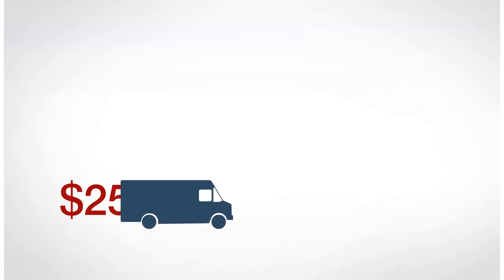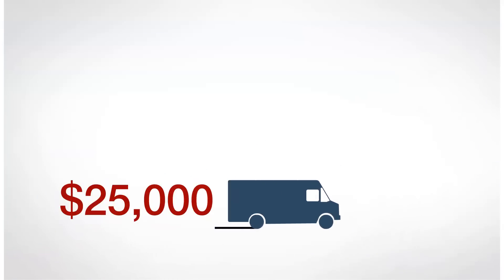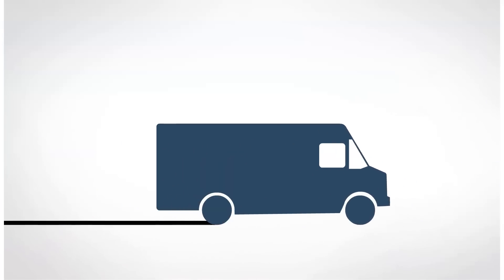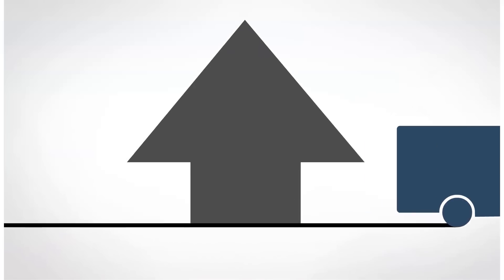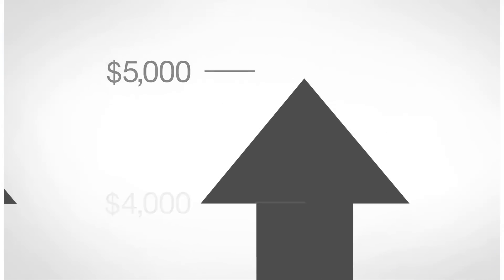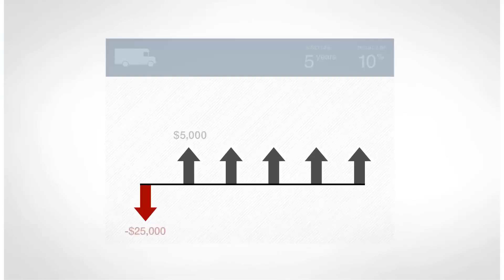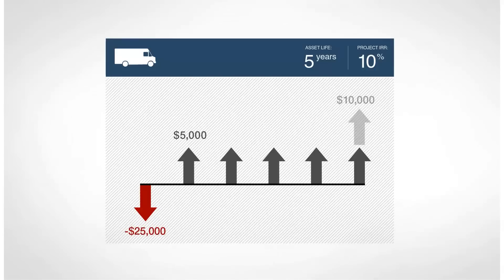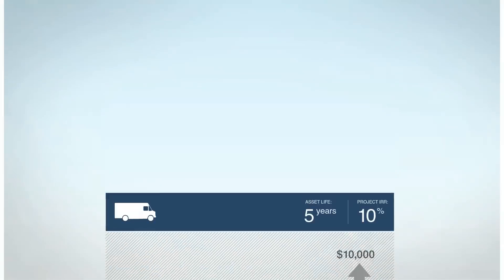Let's imagine we're starting a freight delivery company. Our first project is purchasing a truck to make deliveries. We pay $25,000. Once the truck is in service, the deliveries it makes produce $5,000 of operating cash flow each year. At the end of five years, we can sell the truck for $10,000. Based on these figures, the truck's return on investment, or internal rate of return, is 10%.